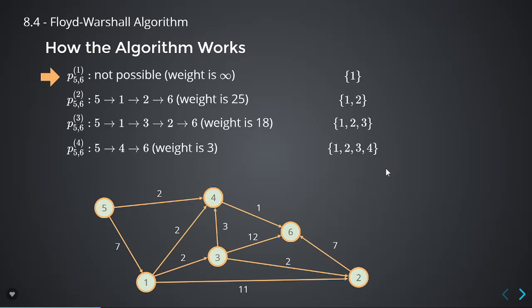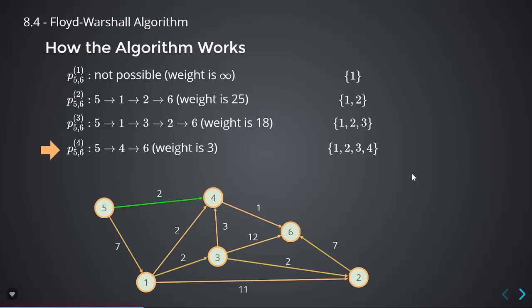This is still a dynamic programming algorithm — it's brute force, just a different way of brute forcing compared to matrix multiplication. To recap the notation: p_5,6,1 is infinity because there's no way to get from 5 to 6 going only through vertex 1. p_5,6,2 — you can get to 6, but the best costs 25. With vertices up to 3, the path costs 18. With vertex 4 allowed, you get the true shortest path by going 5→4→6.